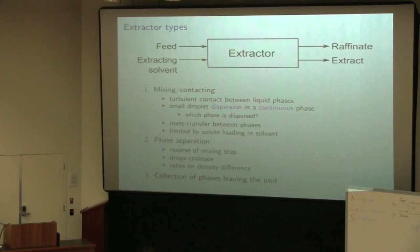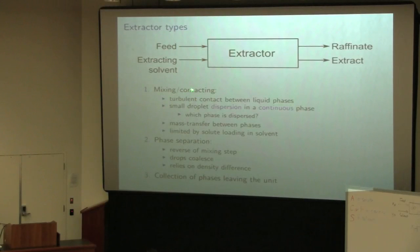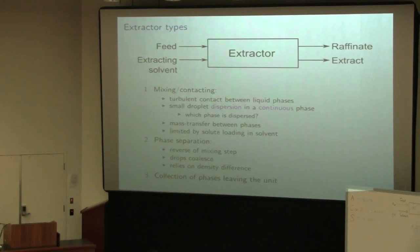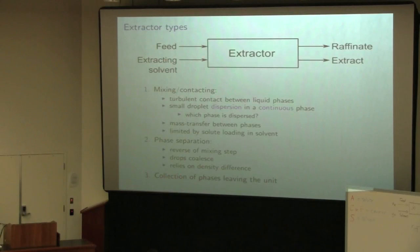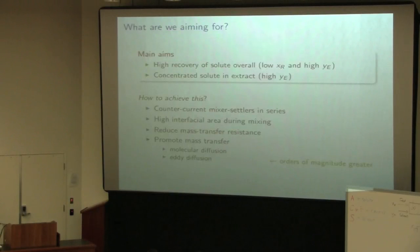We mentioned that there are two major issues: we want very good mixing to get that mass transfer, but we also want the phases to separate again subsequent to that. We want those droplets to coalesce and create the two distinct phases that we can finally collect as leaving streams. So that's what we covered last time.